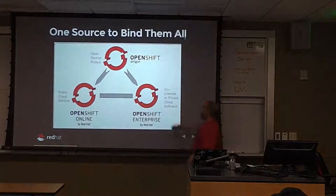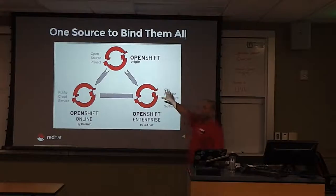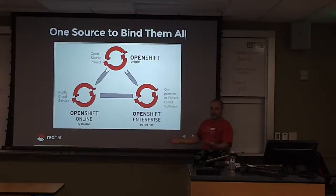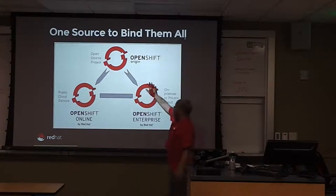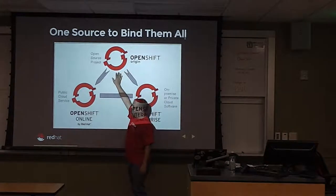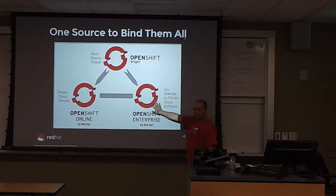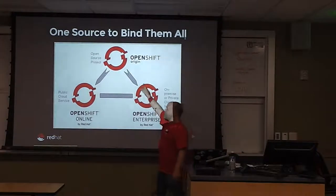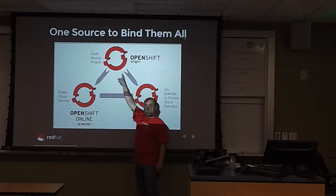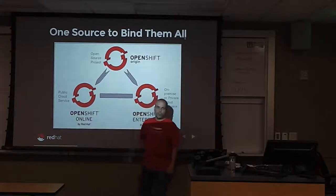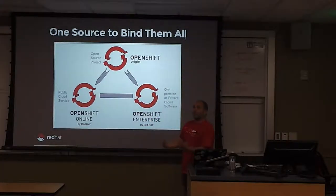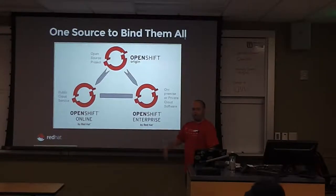One source to bind them all — we are an open source project. OpenShift is from Red Hat. OpenShift Origin is the upstream for both our online service and our enterprise version. If you go to OpenShift.github.io there's all the source code for everything we're running today. The whole platform is written in Ruby. You can write a cartridge for your favorite language.